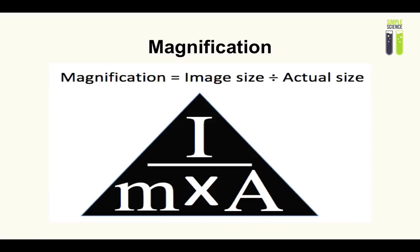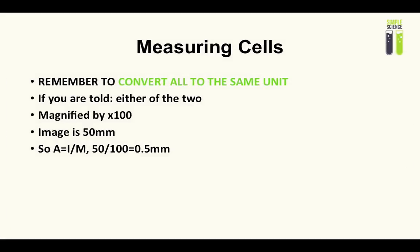Let's check that out — measuring cells. You have to remember to convert to the same units; it makes life so much easier. In the first scenario, you are told two of the three things. For example, if you are told that the image is magnified by 100 times and the image is 50 millimeters, you have M and I, and you do simple basic maths to get A, which is the actual size — 0.5 millimeters. This makes sense because it's a lot smaller than the image since the magnification is 100 times larger.